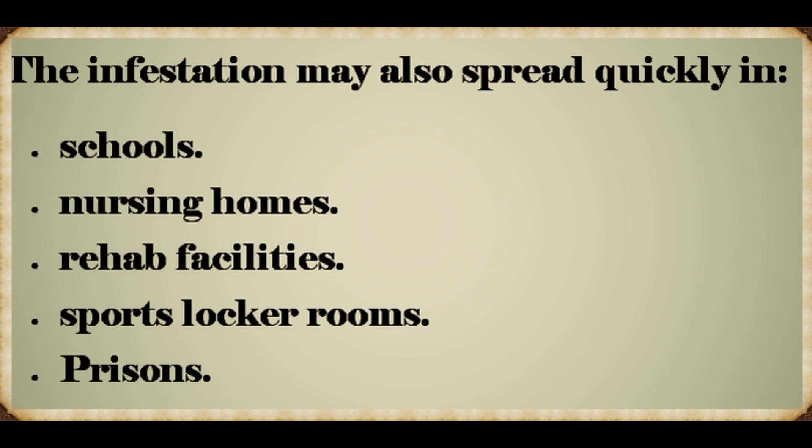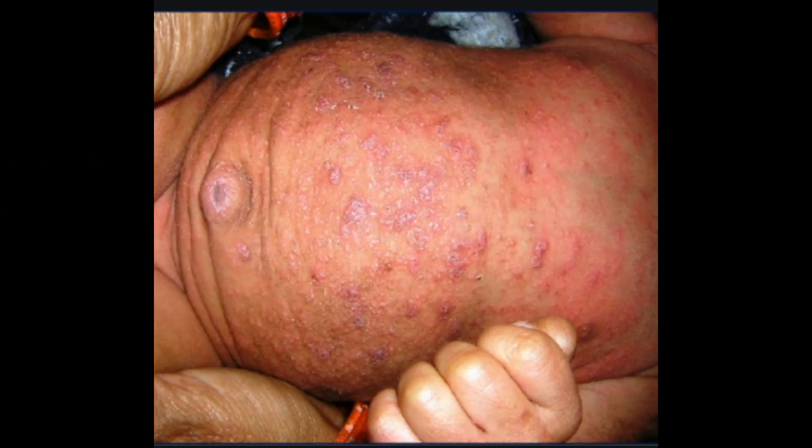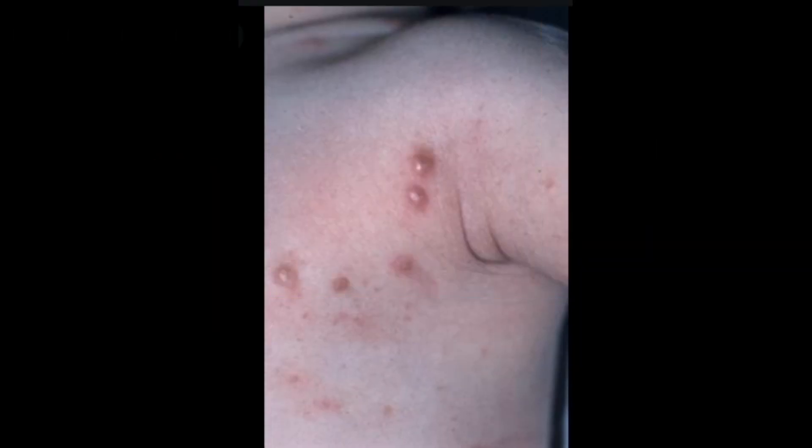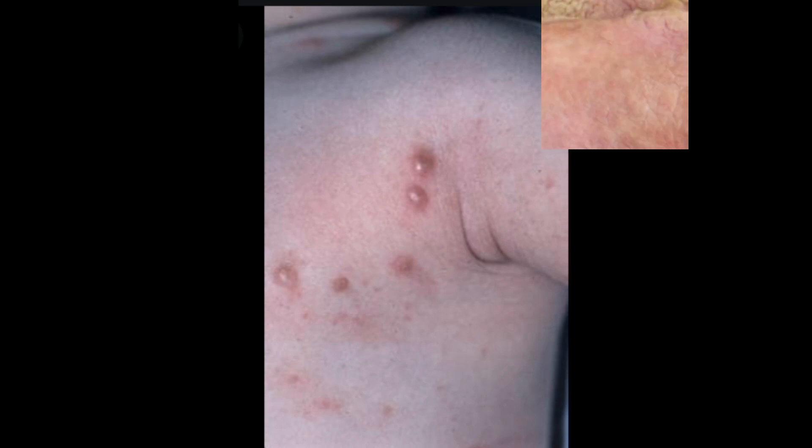There's only one type of mite that causes a scabies infestation — Sarcoptes scabii — however these mites can cause several types of infestations. Typical scabies is the most common; it causes an itchy rash on the hands, wrists, and other common spots but doesn't infest the scalp or face. Nodular scabies may develop as itchy raised bumps or lumps, especially in the genital areas, armpits, or groin.